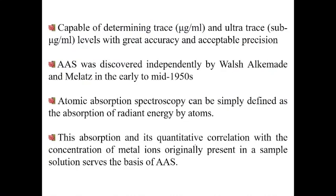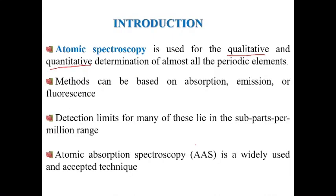Today we are going to start another topic: atomic absorption spectroscopy. This is a technique used to determine the concentration of any element in any kind of sample. All periodic elements can be determined using this technique. Atomic spectroscopy is used for qualitative and quantitative determination of almost all the periodic elements. The method can be based on absorption, emission, or fluorescence.